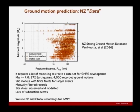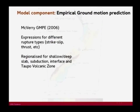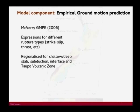In the current national model we've been using the McVerry ground motion prediction equation for 15 years. It uses expressions for different rupture types — strike-slip, thrust, and so on — and is regionalized around the country, treating subduction events, TVZ events, and others differently in the ground motion prediction.